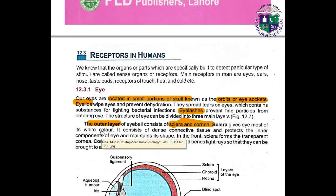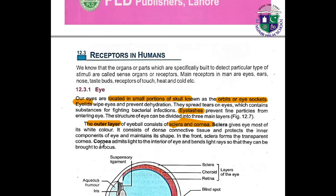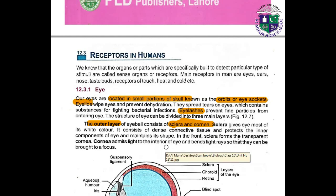In the front, the sclera forms the transparent cornea. The cornea admits light to the interior of the eye and bends the light rays so that they can be brought to focus.